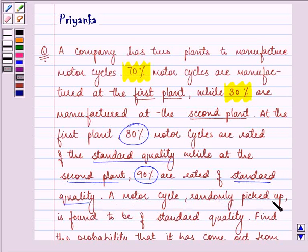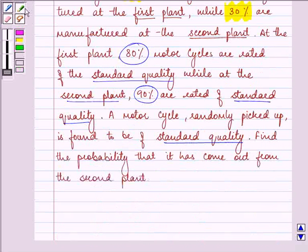A motorcycle randomly picked up is found to be of standard quality. Find the probability that it has come from the second plant.